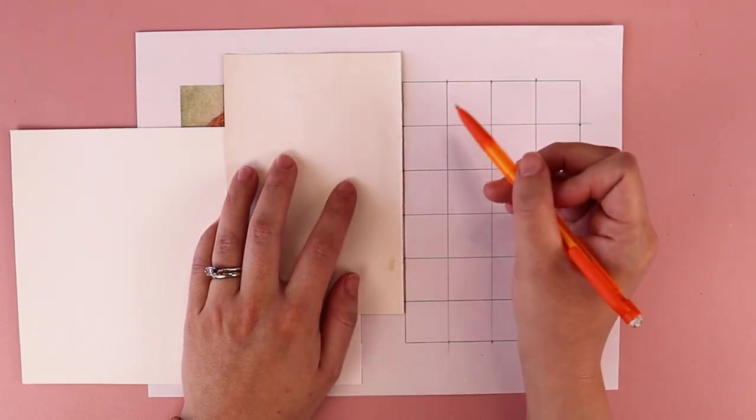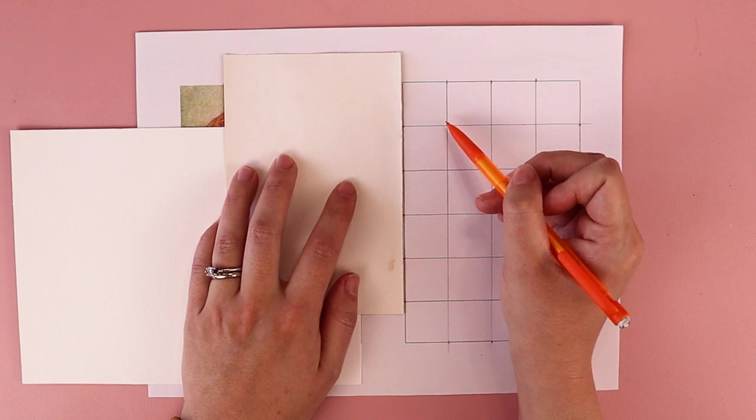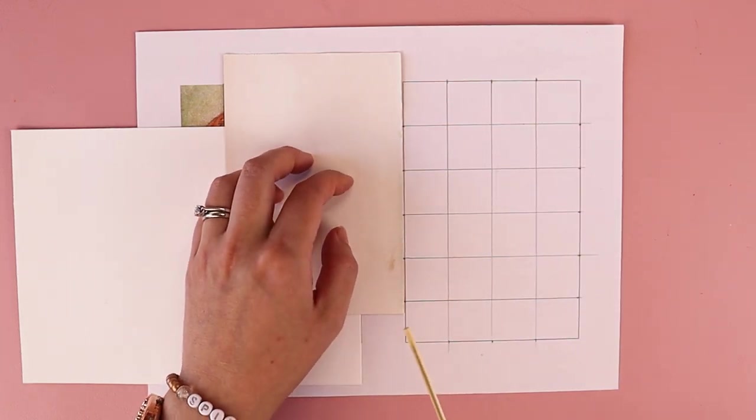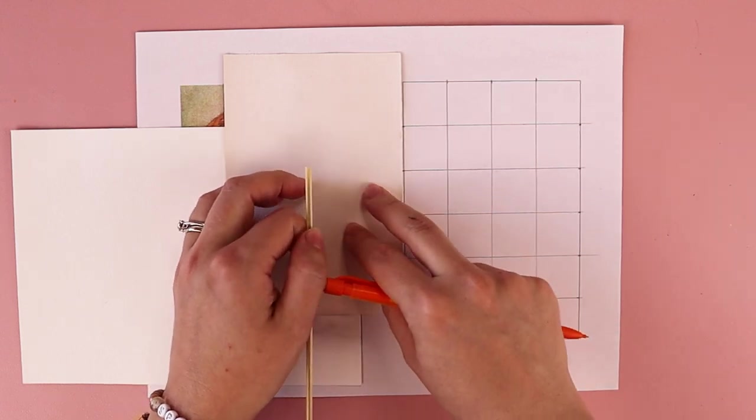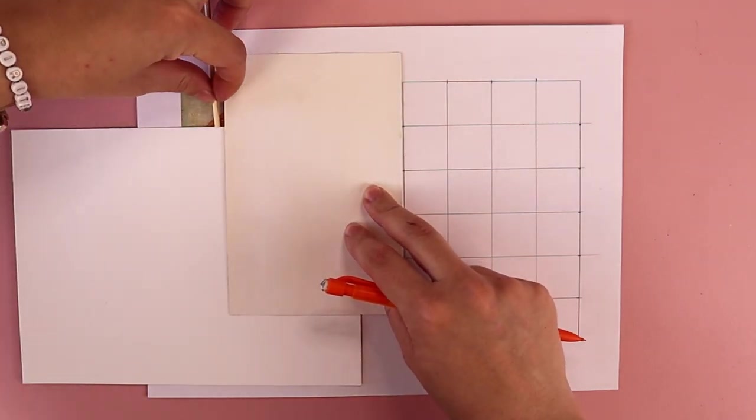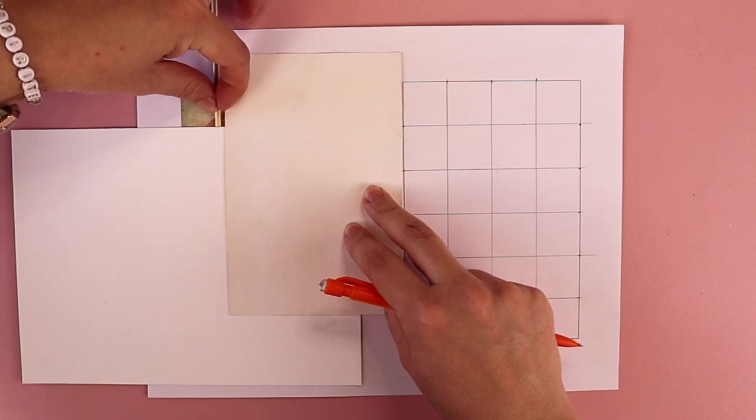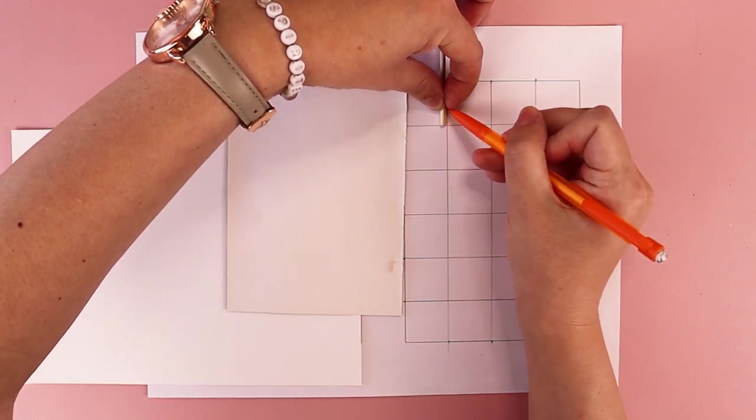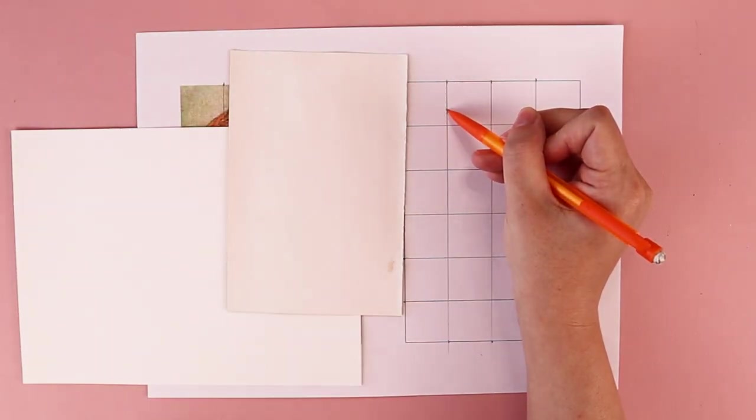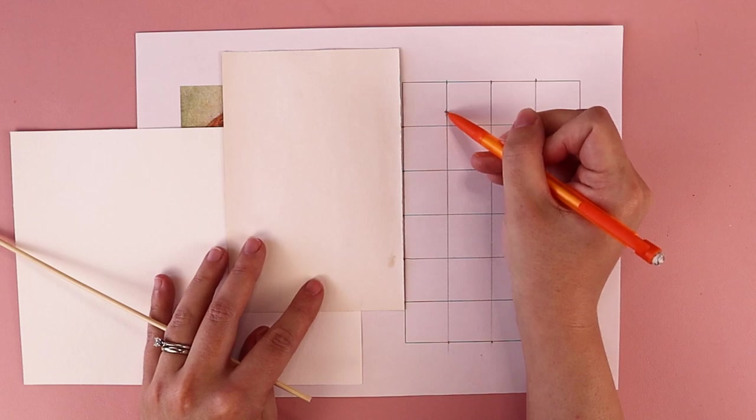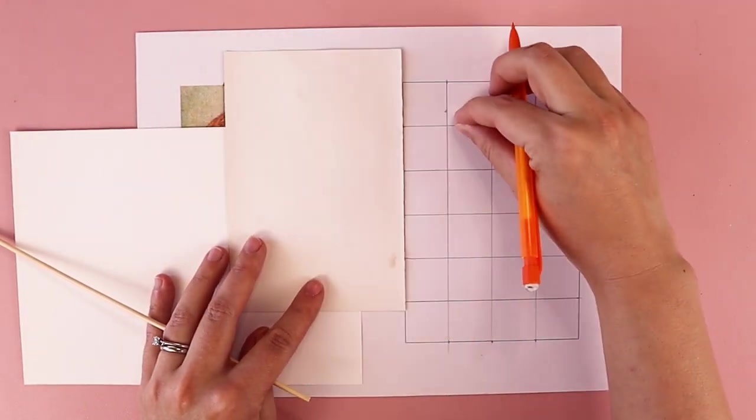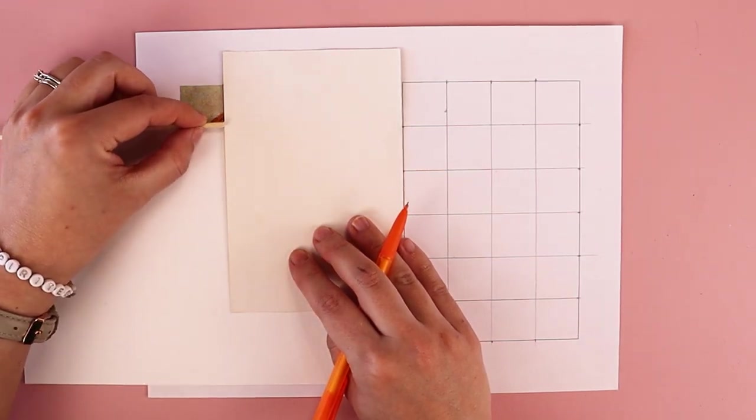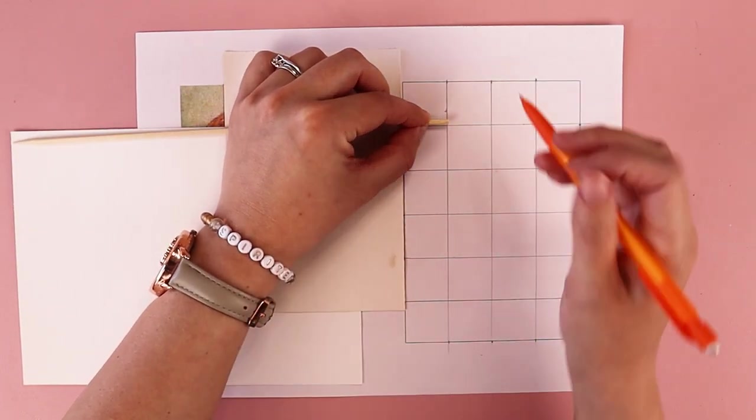So I want to match that curve in this square right here. One thing that you can do that can be helpful is you can use something like a stick to measure the size of each little section that you see. So I know that this is that tall and it is about this wide.